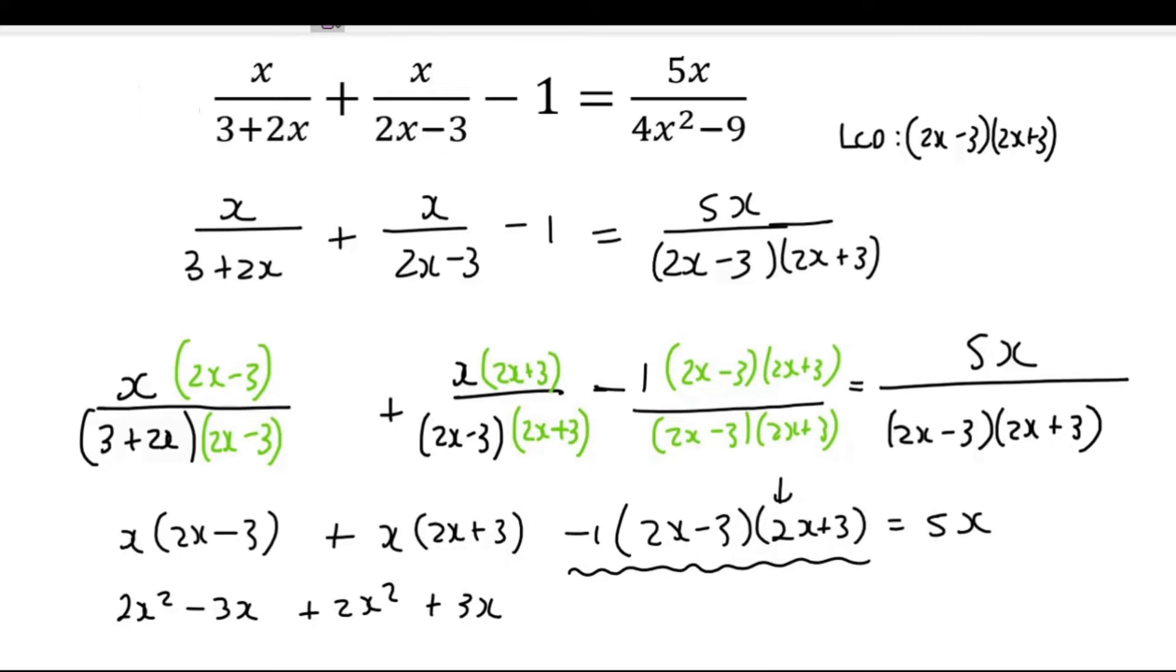So what I would do if I was you is leave the minus 1 alone. And trust me, guys, this is where the people make the mistakes. Say minus 1, and then you multiply these two brackets together like that.